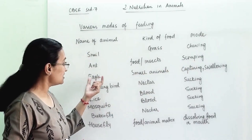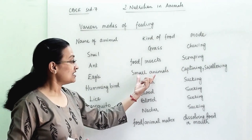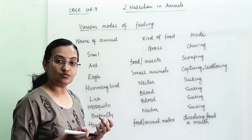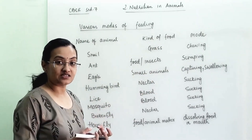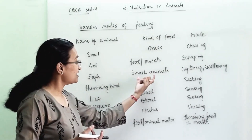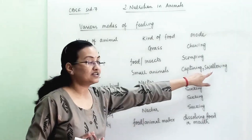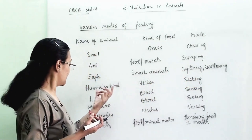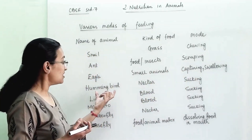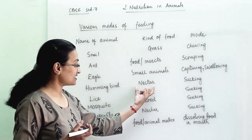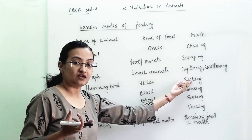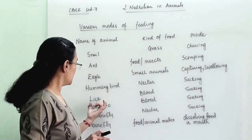Then comes eagle. Eagle will capture small animals like a rat and then swallow them. Hummingbird will take nectar, and with its long beak it will suck the nectar.